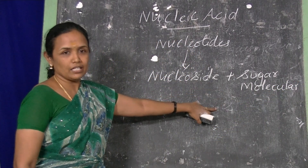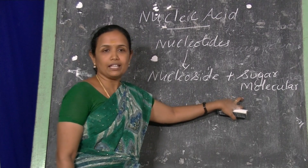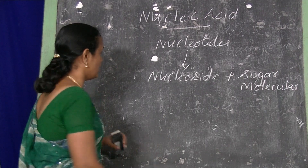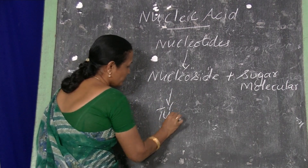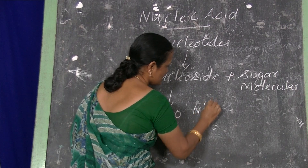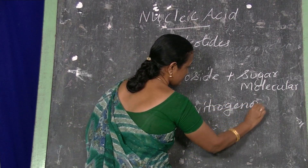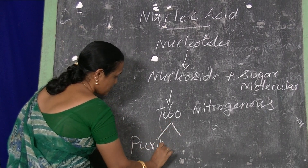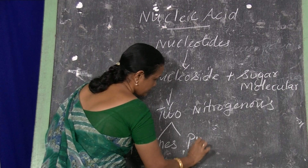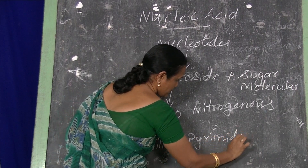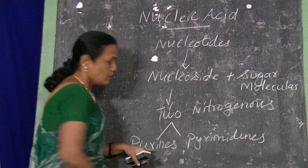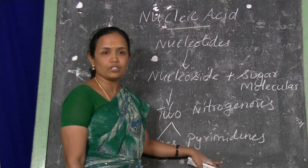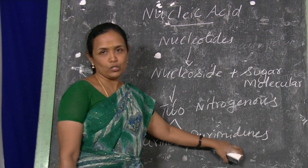Each nucleotide is made up of a nucleoside and sugar molecule. The sugar molecule is ribose in the case of RNA and deoxyribose in the case of DNA. It consists of two nitrogenous bases, that is purines and pyrimidines. Purines are of two types: adenine and guanine. And pyrimidines are of three types: cytosine, thymine, and uracil.